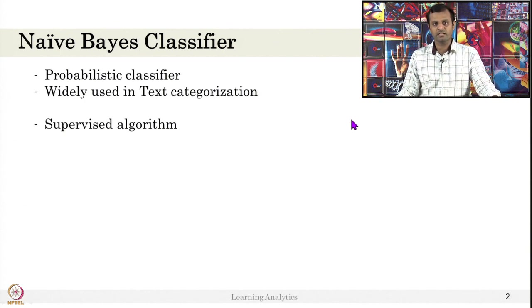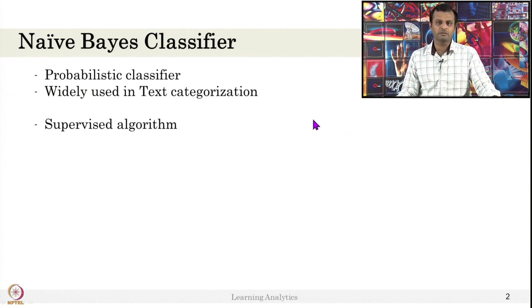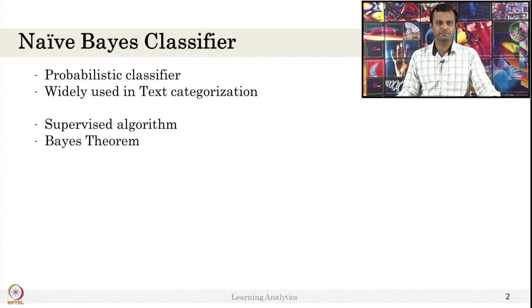We know what is to be done, like a classification — whether you have to predict pass or fail, or whether the student will continue in the course or not, something like that. It is based on Bayes theorem, that is why it is called Naive Bayes.